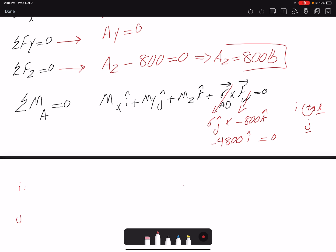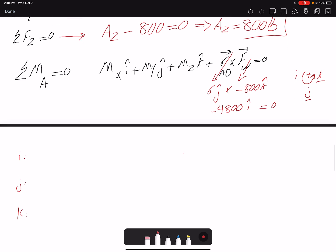The i component, we have MX negative 4800 would be zero. That means that MX is 4800 and the unit is pound foot.